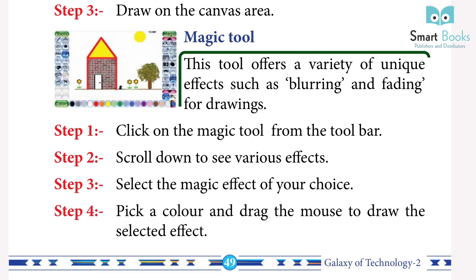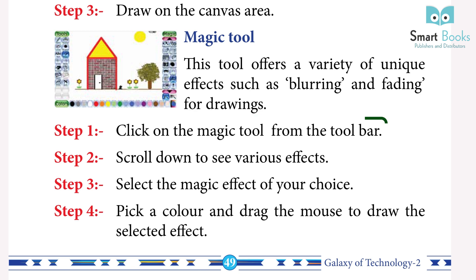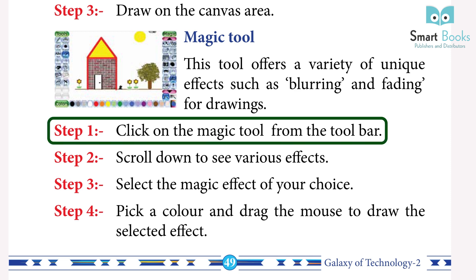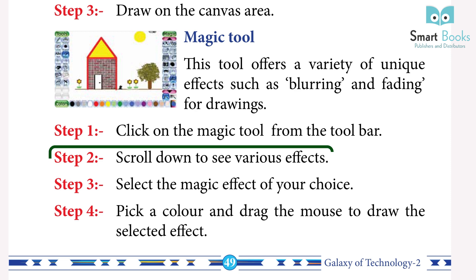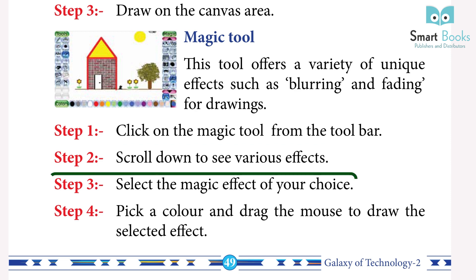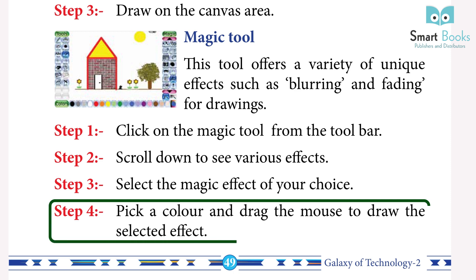Magic Tool: This tool offers a variety of unique effects such as blurring and fading for drawing. Step 1: Click on the Magic Tool from the toolbar. Step 2: Scroll down to see various effects. Step 3: Select the magic effect of your choice. Step 4: Pick a color and drag the mouse to draw the selected effect.